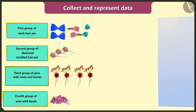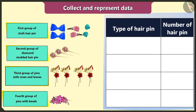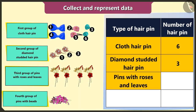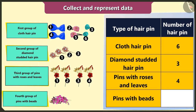Now I will represent all the data by making a table like this. The number of cloth hairpins is six. The number of diamond studded hairpins is three. The number of hairpins with roses and leaves is four. And the hairpin with beads is one.